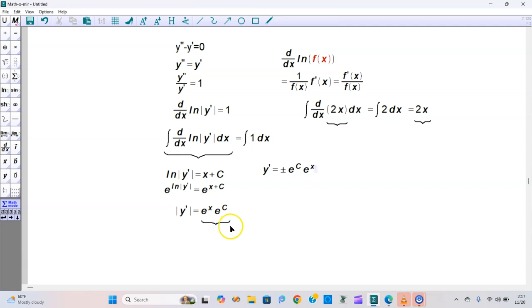But this is y prime, so we can integrate again. When you integrate y prime, you're going to have just y equal to the antiderivative: the integral of plus or minus e to the C times e to the x dx, plus some other constant we're throwing in called B.